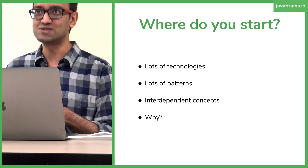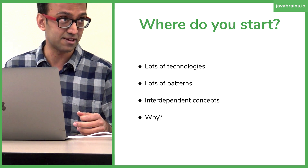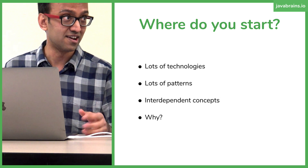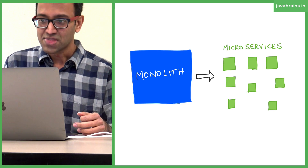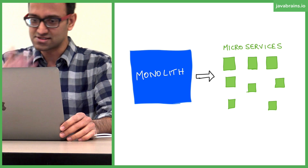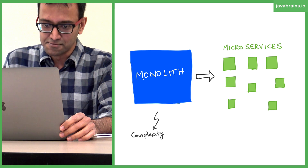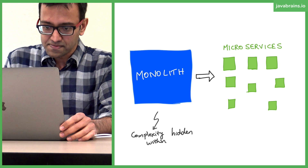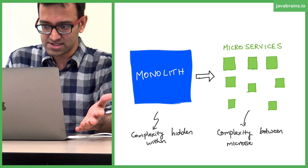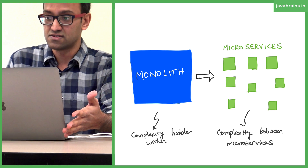You have to learn a lot more technologies, but then you have proven patterns and proven technologies no matter what application you're building. So this is what we're trying to do — monolith broken down to microservices. You have complexity hidden within the monolith, and then you have complexity between microservices in the case of microservices.